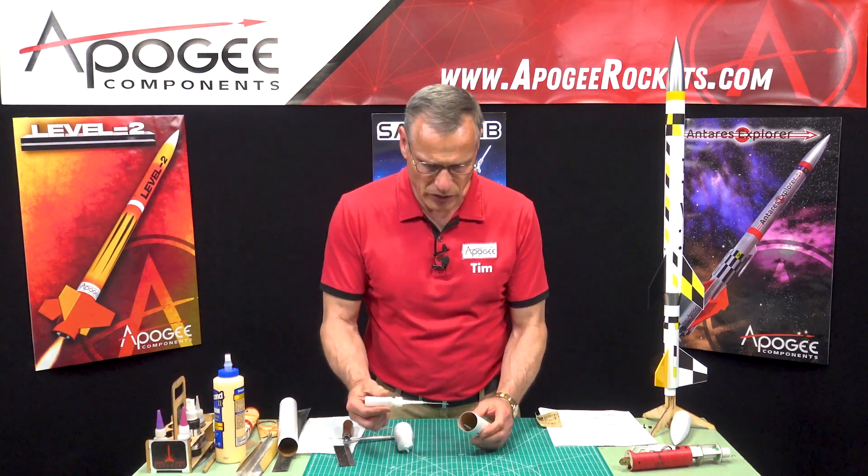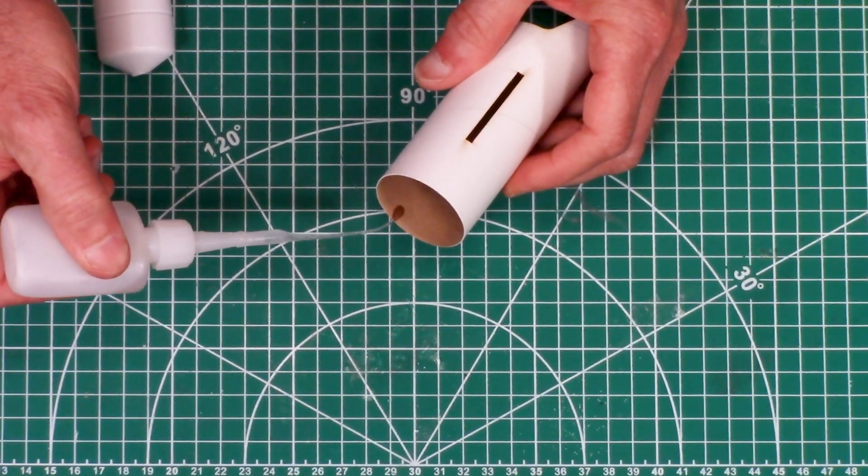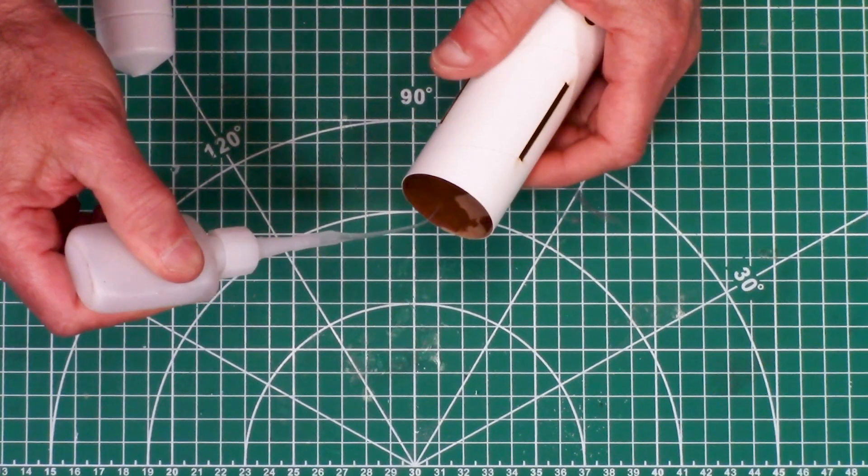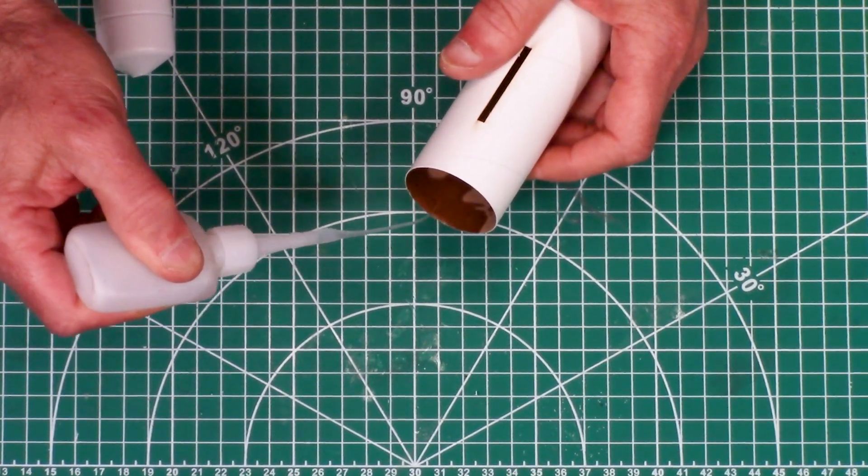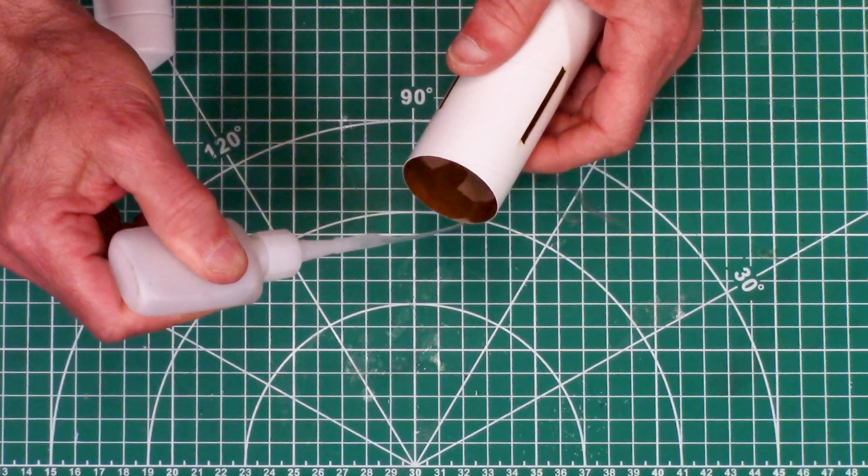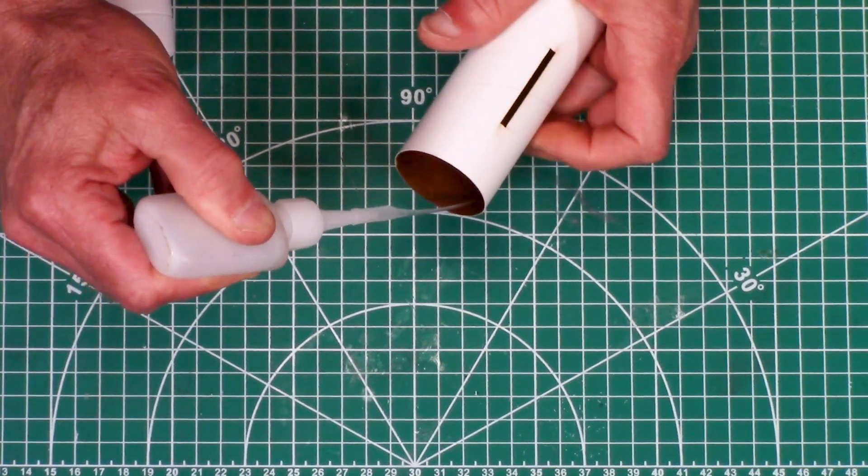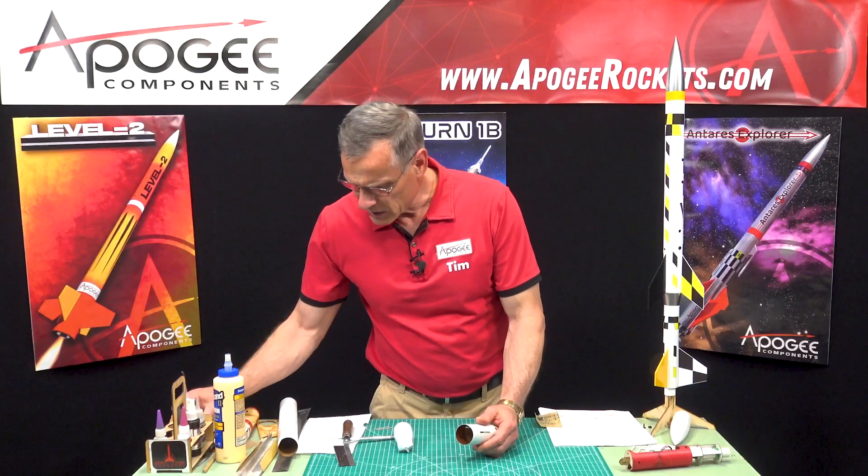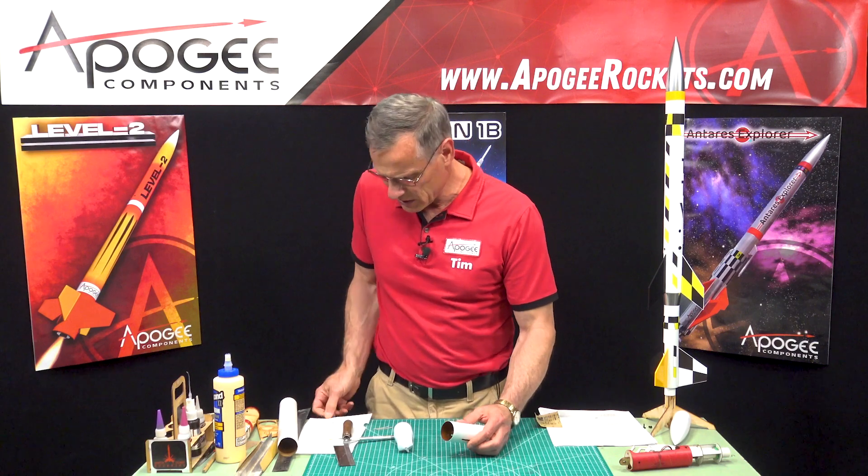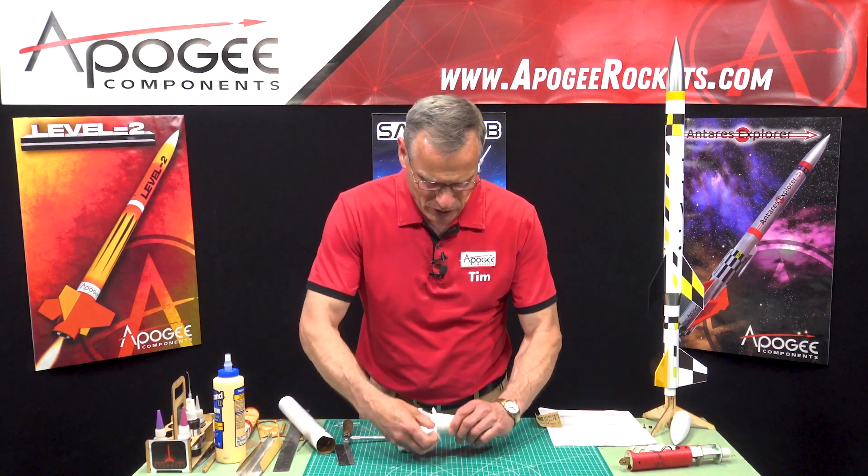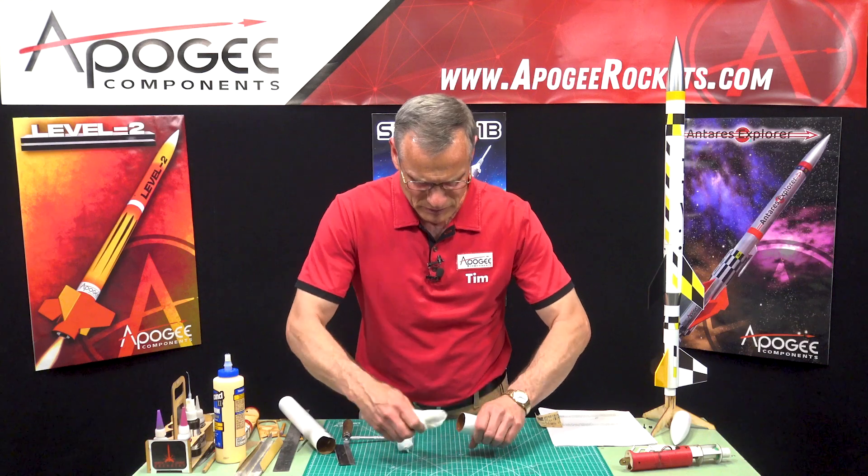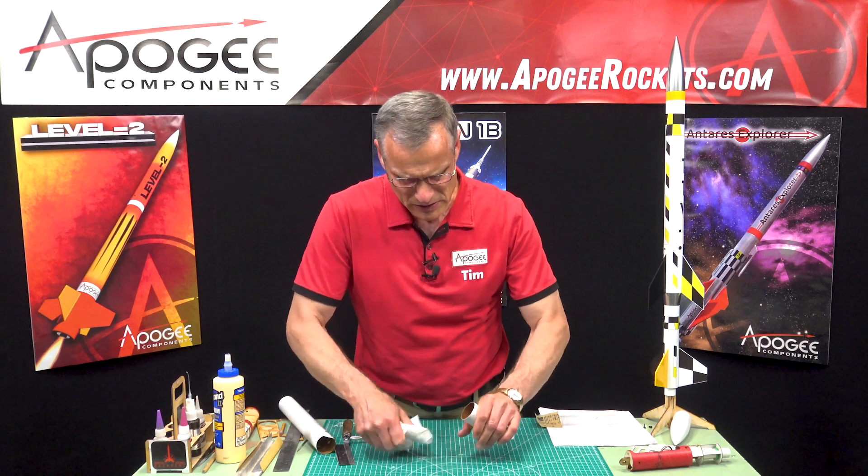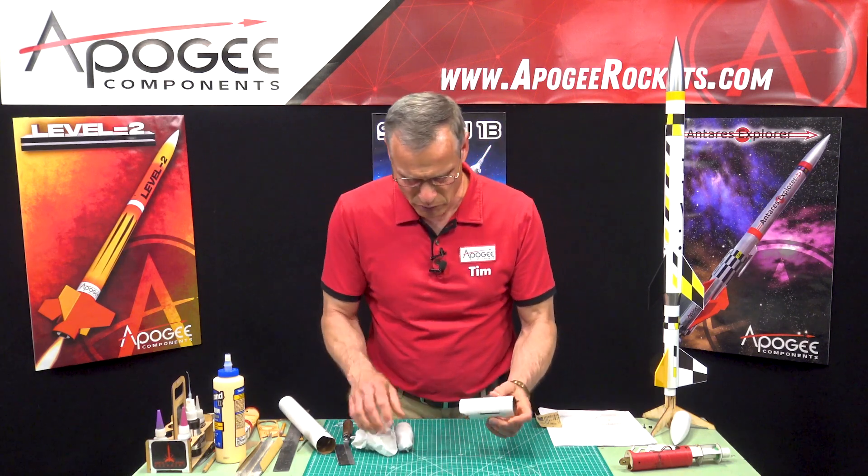We're going to take some thin CA glue and wick that into the fibers and then re-sand. This is going to protect that back end. You only need to go up to the fin slots and then take a paper towel and wipe out any excess. It's going to cure pretty fast.